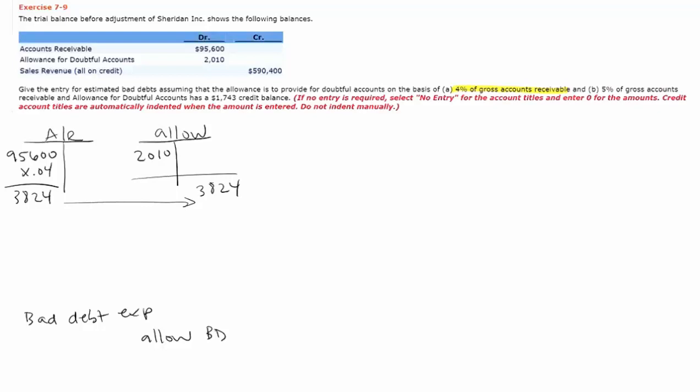So my journal entry will be, what's my adjustment to get it from a debit balance to a credit balance? I can just solve for x here. I'll show a negative $2,010 to represent that it's a debit balance instead of a credit. I'll add to that x, and that should equal $3,824.